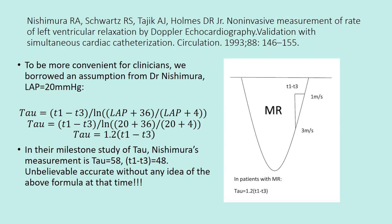In Nishimura's milestone study of tau, his measurement gave tau equals 58 milliseconds, while T1 minus T3 equals 48 milliseconds — unbelievably accurate. Remarkably, nobody knew the above formula yet at that time.